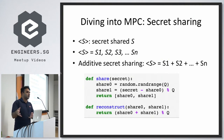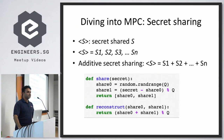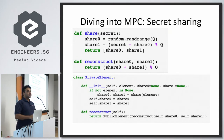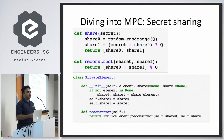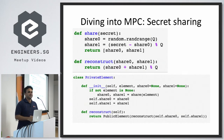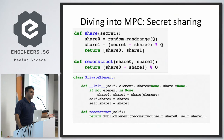Additive secret sharing is the building block for data analysis in a secure multiparty setting. Now that you have share and reconstruct methods, you can construct a class — let's call it PrivateElement. You initialize it by either giving it two shares or taking an input and splitting it with the share method. There's also a reconstruct method that simply adds up the shares.